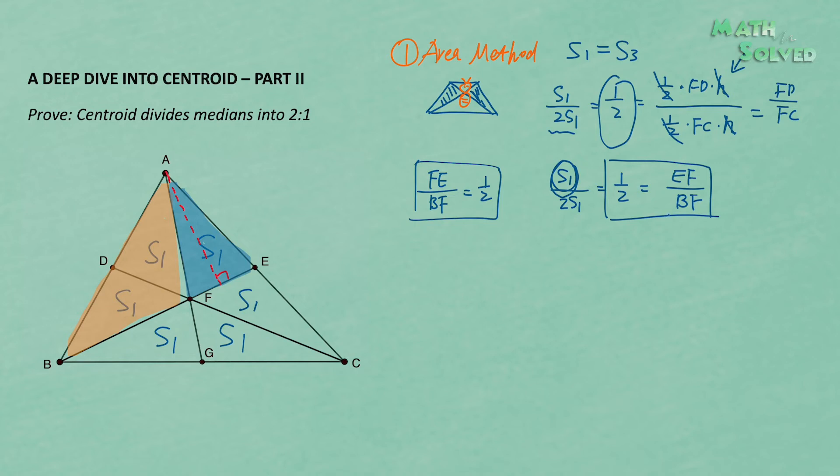This is the area method. Behind it, there is no elaborate theory — we simply use the equal areas of the six triangles in the proof.